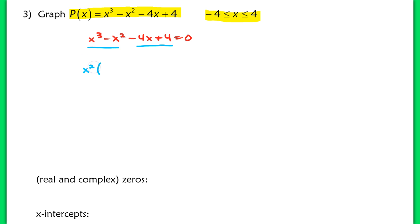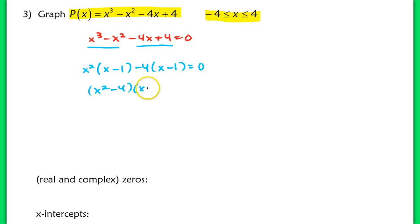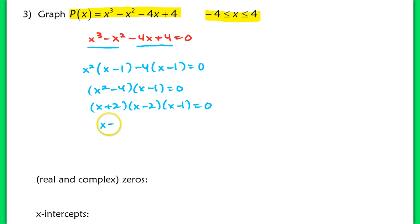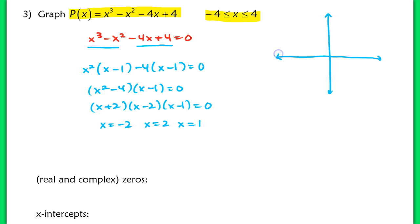Don't always jump to using factor theorem — that should be your last method. In this case, if we group 2 and 2, we can factor by grouping. Taking out x squared from the first two terms leaves x minus 1, and taking out negative 4 from the second two terms also leaves x minus 1. Continuing to factor gives us x squared minus 4 times x minus 1 equals 0, which means we have factors x plus 2 and x minus 2. So we have three real zeros: x equals negative 2, x equals 2, and x equals 1.